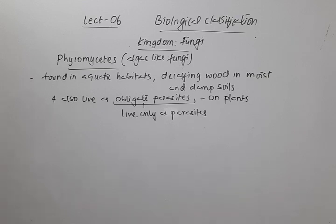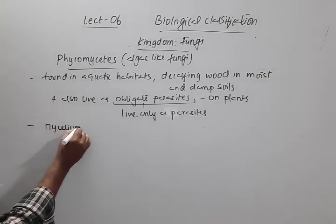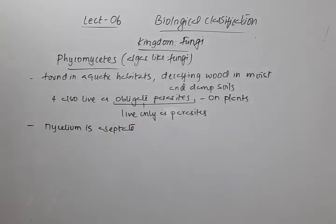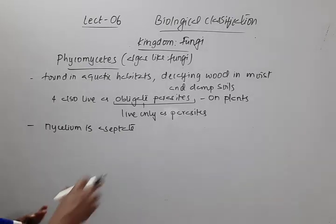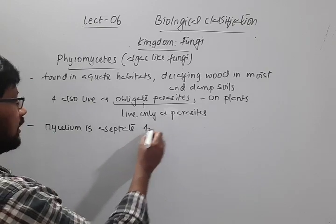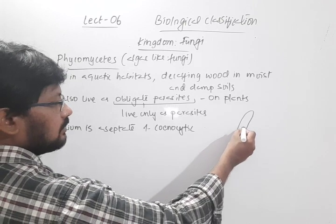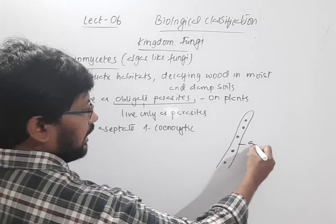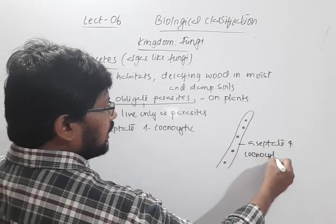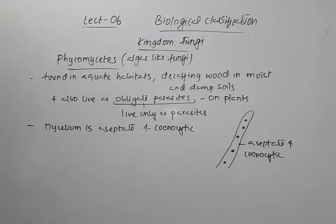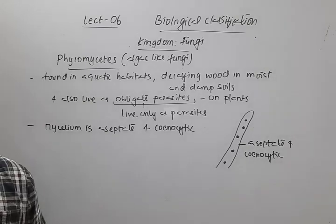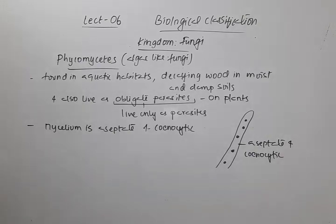Some Phycomycetes are free-living and some are obligate parasites on plants. The mycelium is aseptate, which is consistent with Phycomycetes being under Oomycota, the primitive fungi group. Aseptate mycelium means no partitions are present, giving a coenocytic condition. We will continue with further characters of Phycomycetes in the next session.